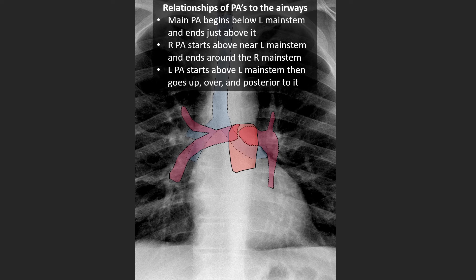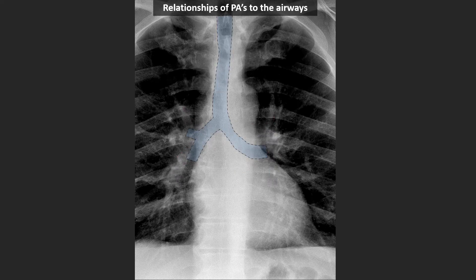Here are these structures superimposed on each other so you can see the anatomical relationships to the trachea and main stem airways. Here again are the target areas that we want to look for catheter position.